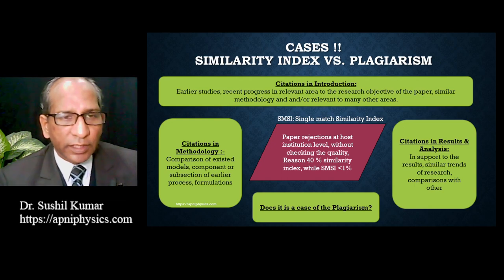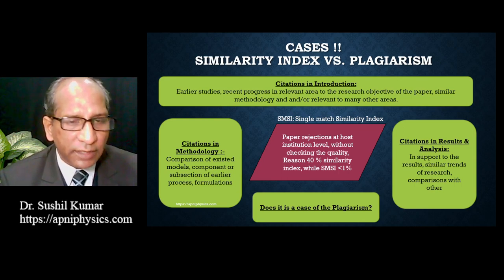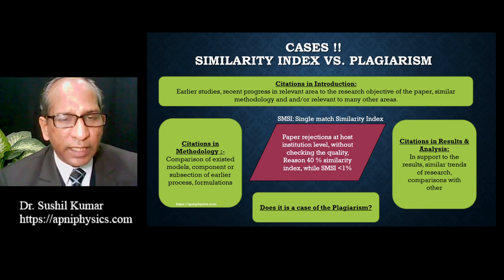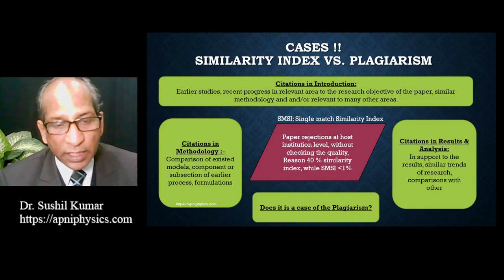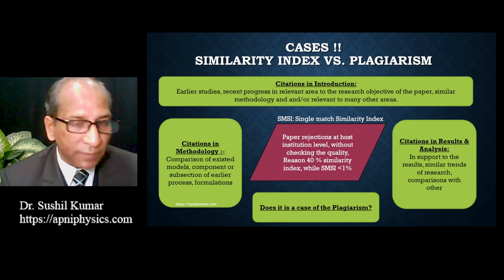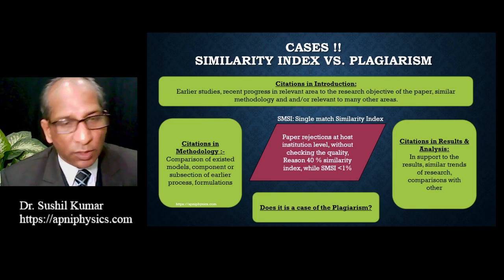In an earlier video, I had mentioned that if we are using 60 references and our similarity index comes to around 40%, where each single match carries either one or less than one percent — does that 40% similarity index violate the rules as per the UGC 2018 act? What would be the answer? What do you think about it?